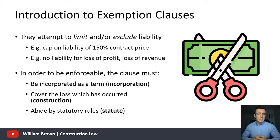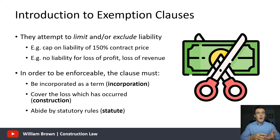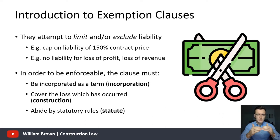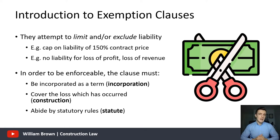So what exactly is an exemption clause? It's an express term of the contract that seeks to do one of two things: it will either seek to limit one party's liability or exclude liability for some sort of loss. It could take the form of a cap on liability — a cap on one party's liability in damages to a set fiscal amount — and we would call that a limitation clause. This is very common in commercial contracts where one party limits their liability to a percentage of the original contract price.